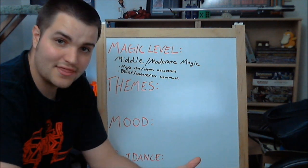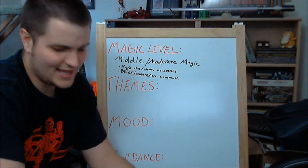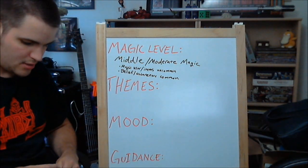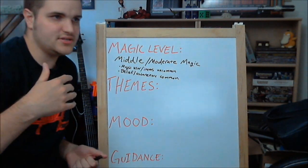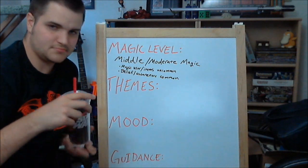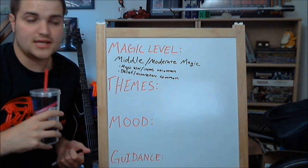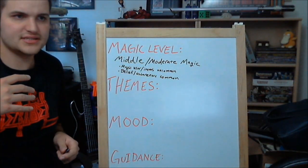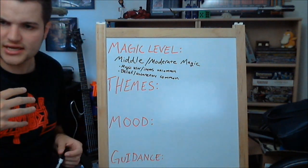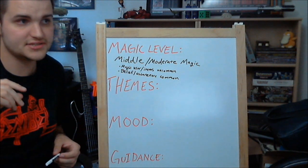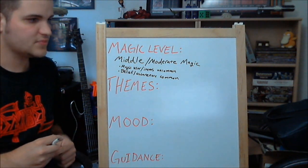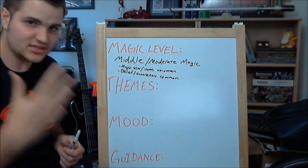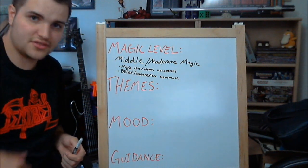Now we're going to move on to themes. Themes are incredibly abstract, and theme and mood really kind of go together and mesh a bit. Let's take an example — something really easy. Let's take Star Wars and look at its themes. The themes of Star Wars are self-discovery, journey, uncovering secrets, rescue, making friends, going out of your comfort zone, and leaving your old life behind. These are the themes of Star Wars.